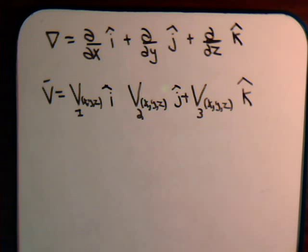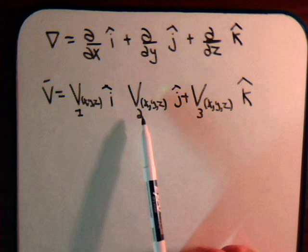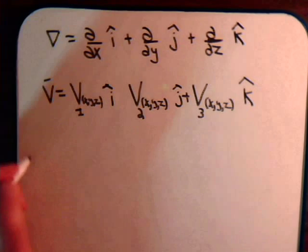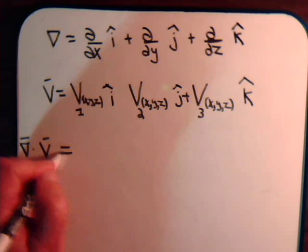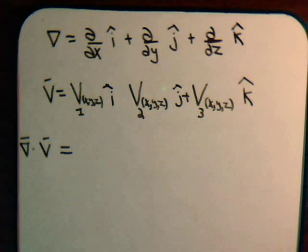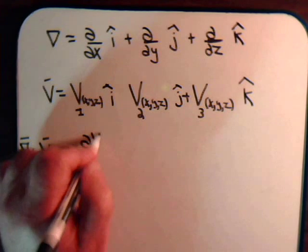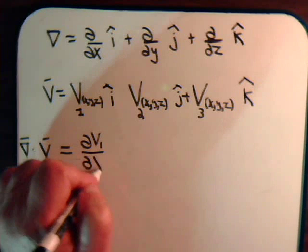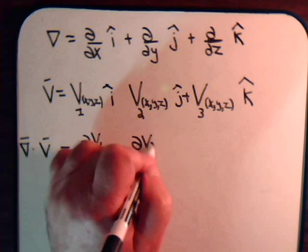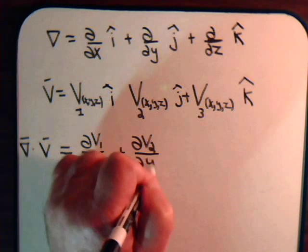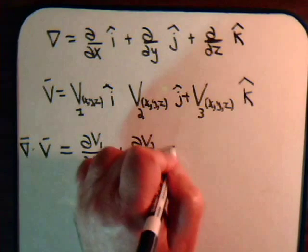In earlier videos we learned how to take the curl of the vector. Now to take the divergence, that's just taking the dot product of the del operator with the vector. So del dot V gives us the partial of V1 with respect to x, plus the partial of V2 with respect to y, plus the partial of V3 with respect to z.